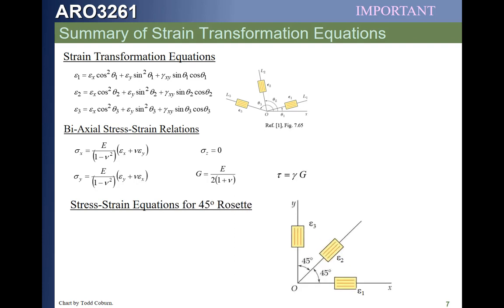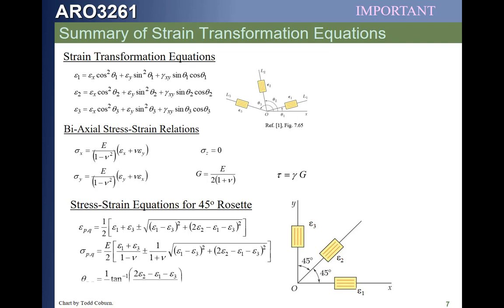And these equations for a 45-degree rosette, this is the most important thing. This is actually quite straightforward when we find a 45-degree rosette. We find the two principal strains; the strain in the two directions are given by the first equation, and the stresses are given by the second equation, and the angle of those is here as well. This is actually quite straightforward when we get a 45-degree rosette.